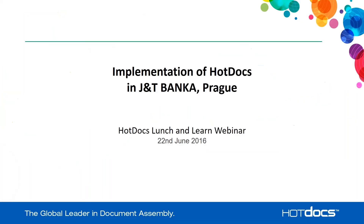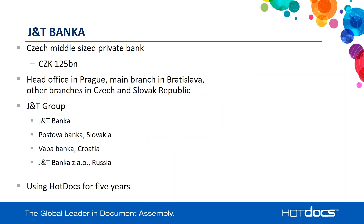Hello, thank you very much. My name is Jakob Schwab. I am Head of the Legal Department at J&T Banka Prague, and I am also the administrator of HotDocs at J&T. J&T Banka is a middle-sized private bank; its capitalisation is about 125 billion crowns, which is around 4 billion pounds. The head office is in Prague and the main branch is in Bratislava. The bank has branches in Czech and Slovak Republic, and J&T Bank is a member of J&T Financial Group, with other banks in Croatia, Russia, and Poštová Banka in Slovakia, which is quite a big retail bank.